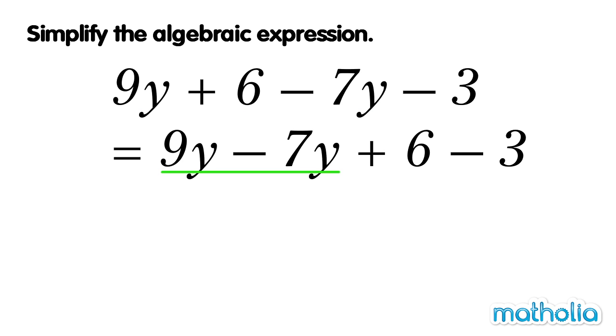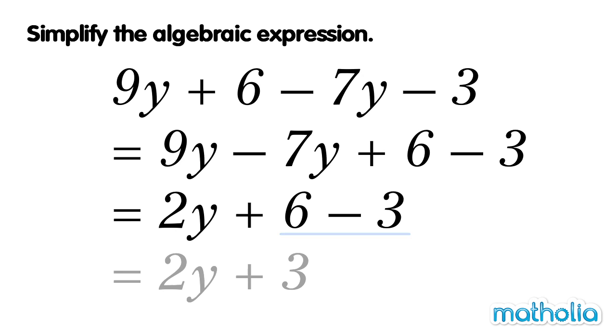9y minus 7y equals 2y. 6 minus 3 equals 3. So 9y plus 6 minus 7y minus 3 equals 2y plus 3. We have simplified the expression.